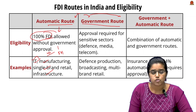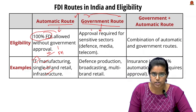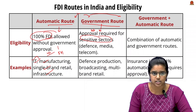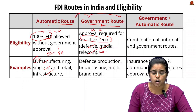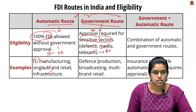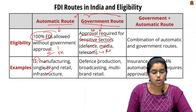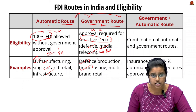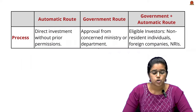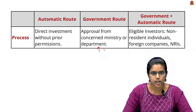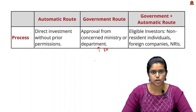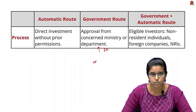The second is the government route, where you must obtain permission or approval from the government because these involve sensitive sectors linked to national security, such as defense, media, and telecom. Examples of sectors under the government route include defense production, broadcasting, and multi-brand retail. Approval must be obtained from the concerned ministry or department.